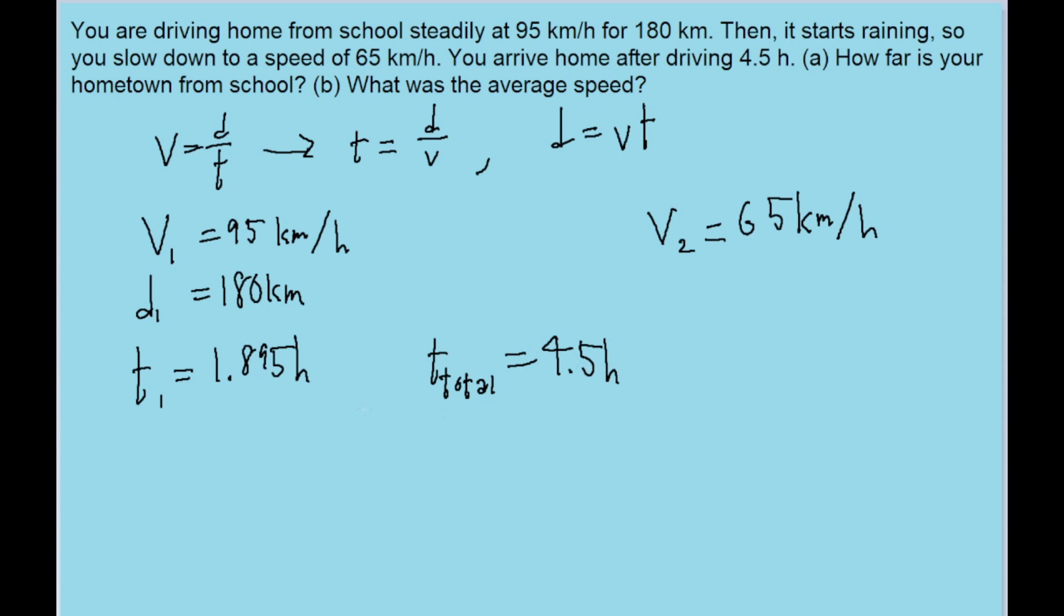Now because we know that the total time is 4.5 hours, we can take this total time and subtract t1 to find that t2, the amount of time we spend in phase two, is equal to 2.605 hours. So now that we know that, then we can use this distance equation here to solve for d2. As we multiply the speed by the time, we find a distance here of about 169.3 kilometers.